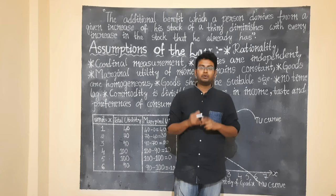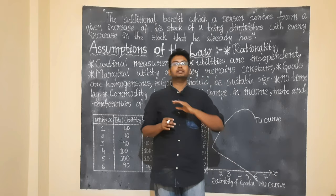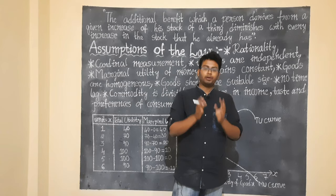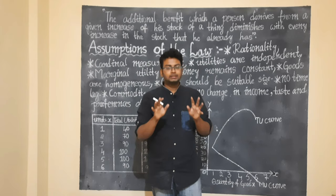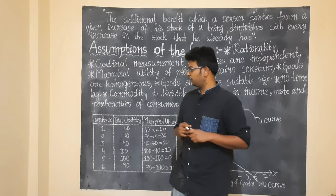So to summarize the assumptions: the consumer is rational and aims for maximum satisfaction. The goods should be homogeneous — same quality. There is no time lag between consumption. Income, taste, and preference of the consumer must remain constant — no differences, no changes. As long as these conditions are maintained consistently, the Law of DMU applies. Clear, students?